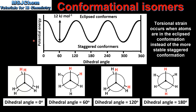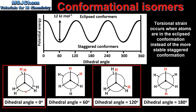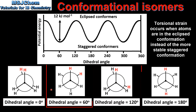Torsional strain is greatest in the eclipsed conformers. The two conformers with dihedral angles of 0 and 120 degrees are eclipsed conformers, and these are 12 kJ per mole less stable than the staggered conformers. The staggered conformers are those with a dihedral angle of 60 degrees and 180 degrees, and they are more stable by approximately 12 kJ per mole.